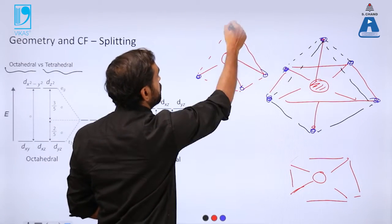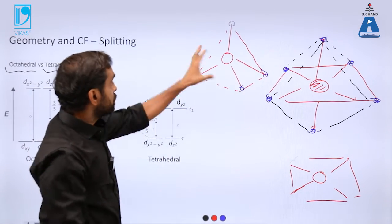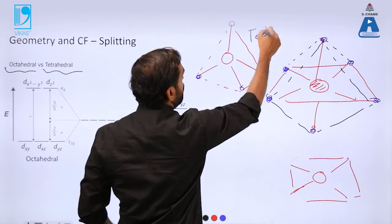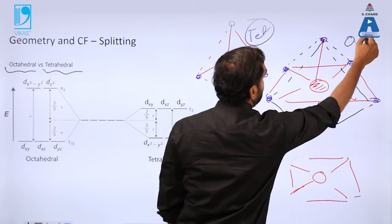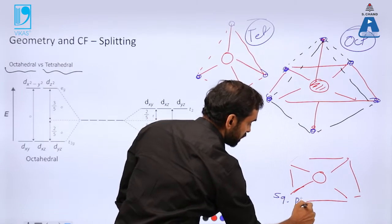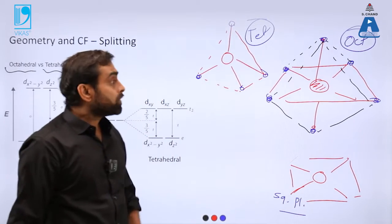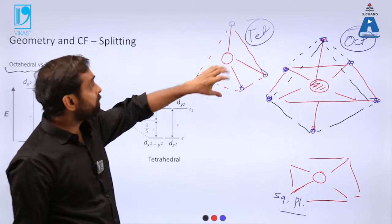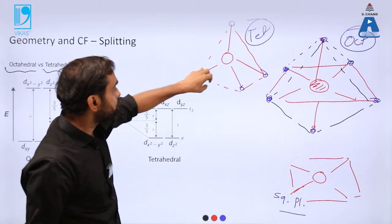So this is tetrahedral geometry and this is octahedral geometry. This is square planar geometry. Now does it make any difference if there are only four ligands which are coming close and binding with a metal ion compared to six atoms which are binding here?